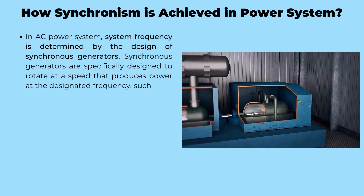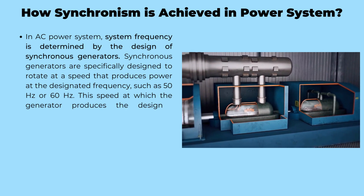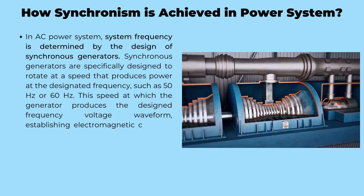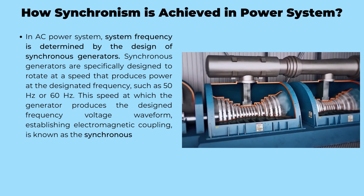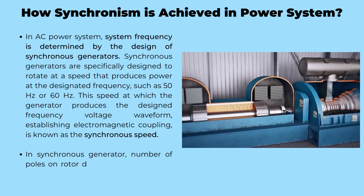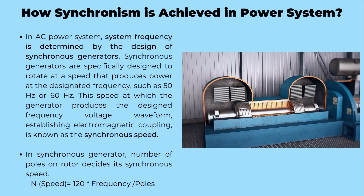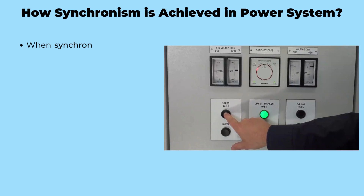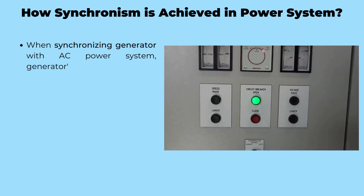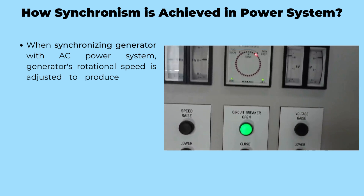This specific speed, known as the synchronous speed, establishes an electromagnetic coupling, paving the way for synchronization. The synchronous speed of a generator is determined by the number of poles on its rotor. These poles dictate the rotational speed required to produce a voltage waveform with the designated frequency. It's through this synchronized rotation that the generator can seamlessly connect with the AC power system. Synchronizing a generator with the AC power system involves a careful adjustment of its rotational speed, aligning the generator's frequency and phase angle with that of the power system.